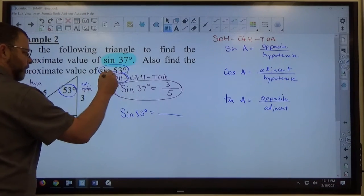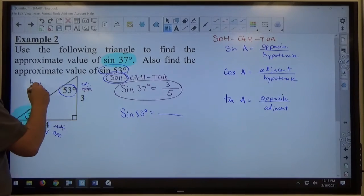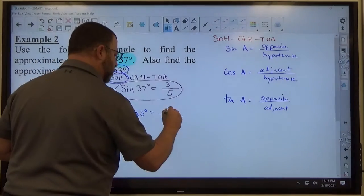Using SOHCAHTOA again, but this time opposite is 4, hypotenuse is 5, so the answer is 4 fifths.